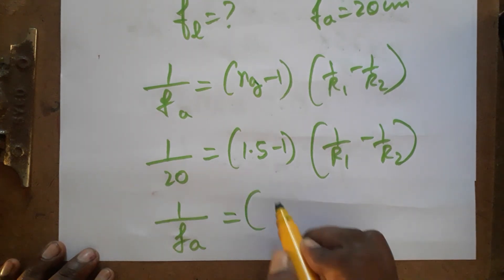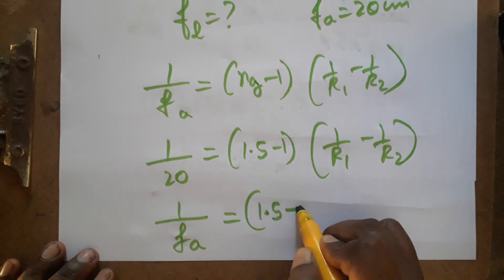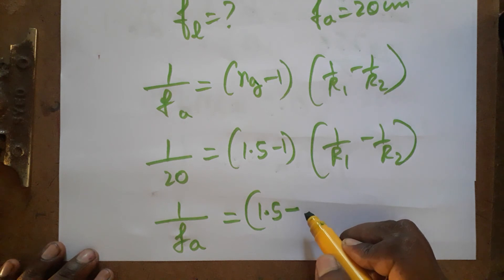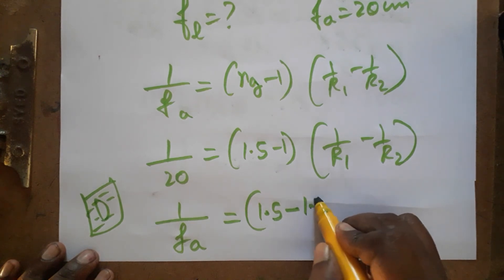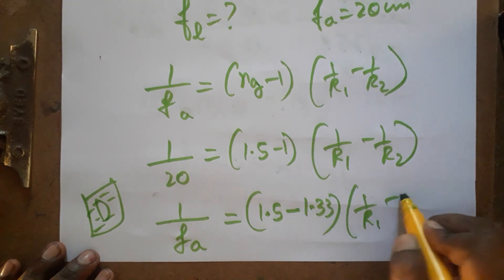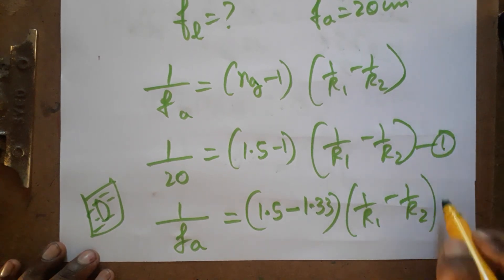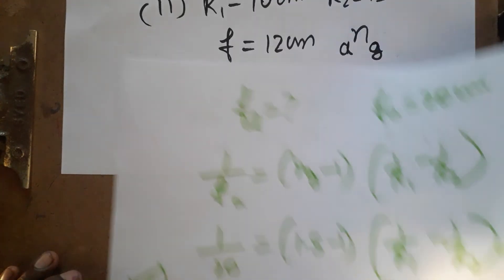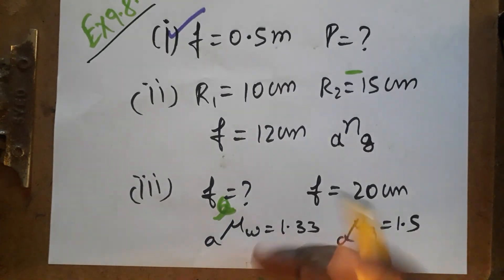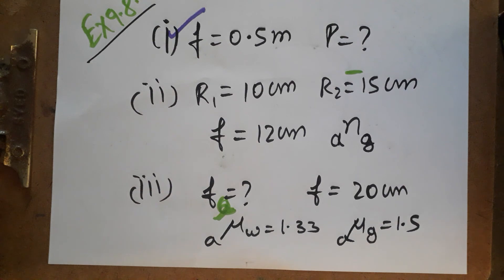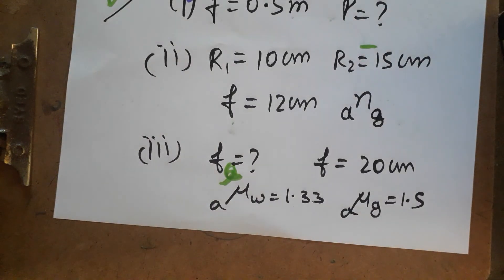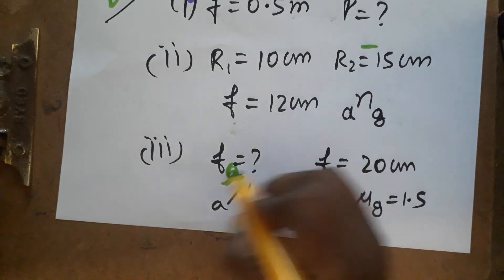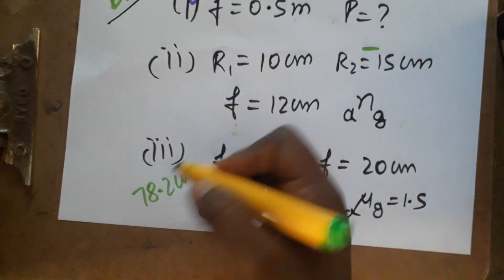When the same lens is placed inside water, the first medium is water (n = 1.33) and the second medium is glass (n = 1.5). So: 1 over f_water = (1.5 over 1.33 minus 1) times (1/R1 minus 1/R2). Dividing the two equations eliminates (1/R1 minus 1/R2). Solving gives the focal length of the lens in water as 78.2 centimeters.